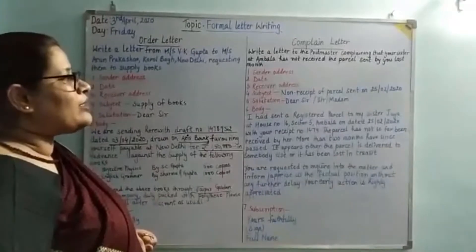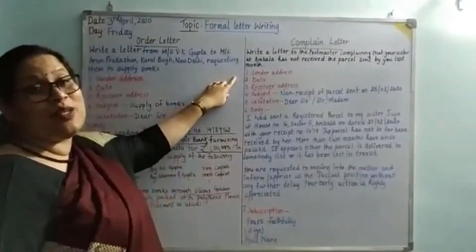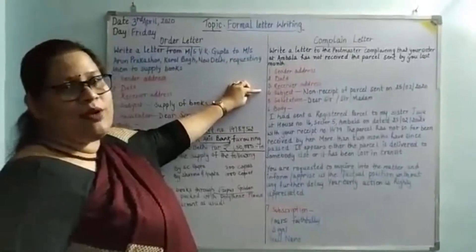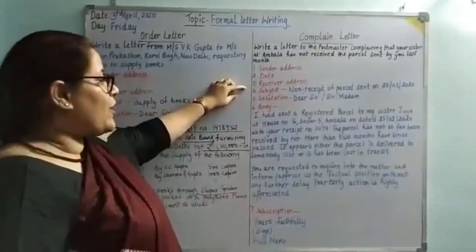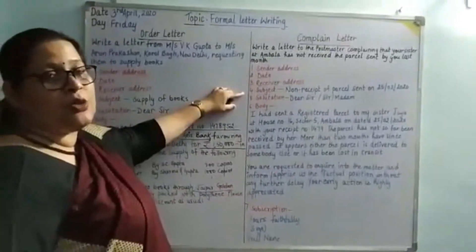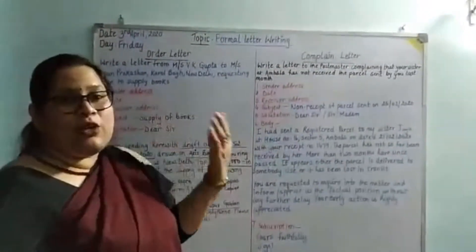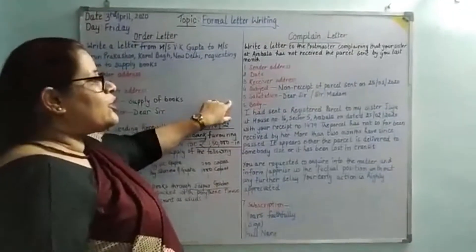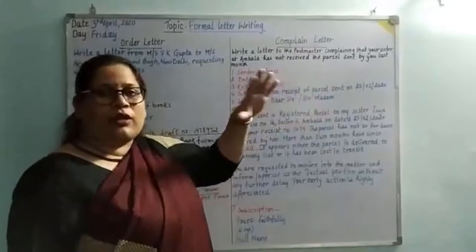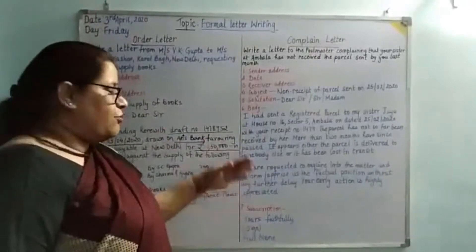Again, I have not written the sender address — you will write your own address, followed by the date and the receiver's address, which may be the postmaster's address. The subject will be: 'Non-receipt of parcel sent on 25th February 2022,' meaning you sent the parcel on 22nd February and it has not been received by your sister. For the salutation, you could use 'Dear Sir,' 'Sir,' or 'Madam,' depending on the information provided in the question. The body follows a two-paragraph, no-indentation format.